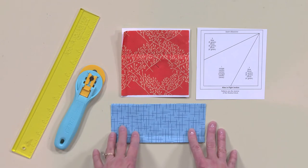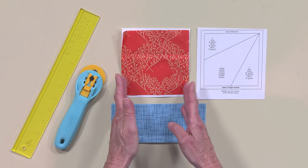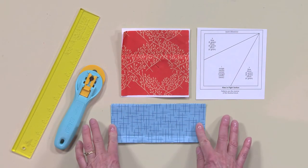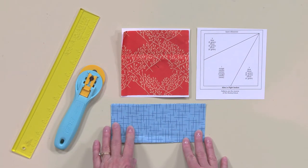Now, to make this block more efficiently, what I've done is cut a five inch square to use for my number one piece, and then three by seven inch rectangles for my number two and number three piece.